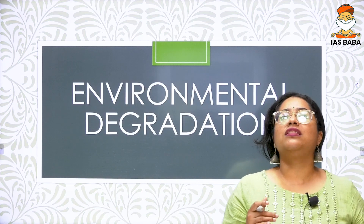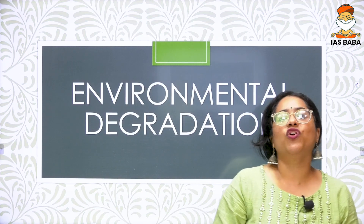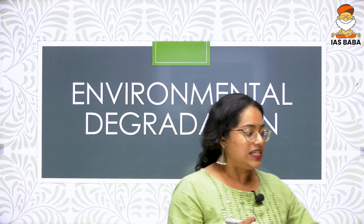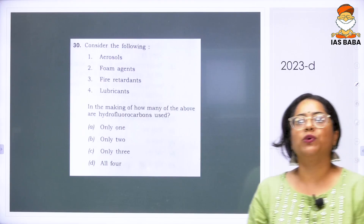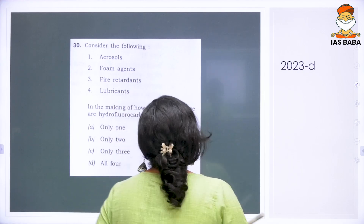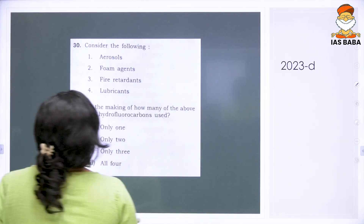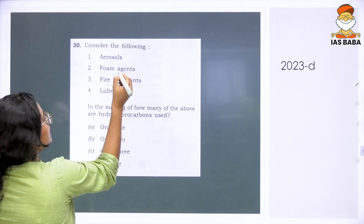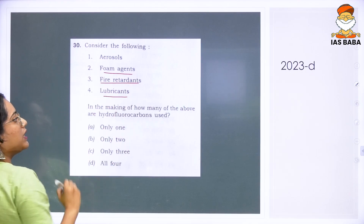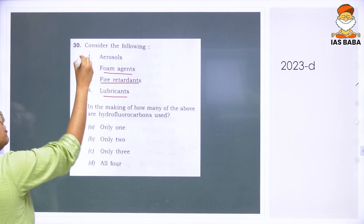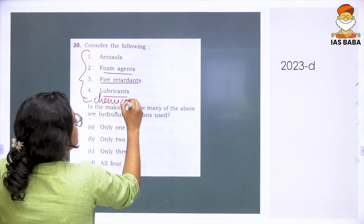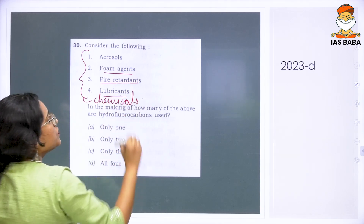We are currently in the theme of environmental degradation. When it comes to environmental degradation, the first question we are going to discuss is a 2023 question. Consider the following: there are aerosols, foam agents, fire retardants, and lubricants. These are all different types of chemicals that act as the basis of certain other things.